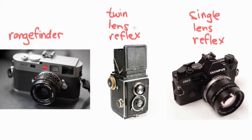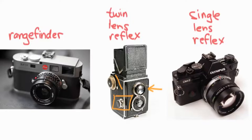Let's start with the twin lens reflex. It's really cool because it's built with the idea of having one lens for a viewfinder and one lens for the film. This top lens is your viewfinder, and this bottom lens is for your film. The picture being taken goes through the bottom lens onto the film back here.